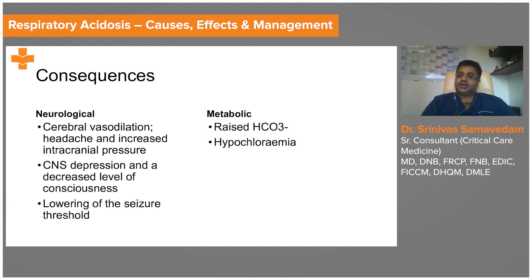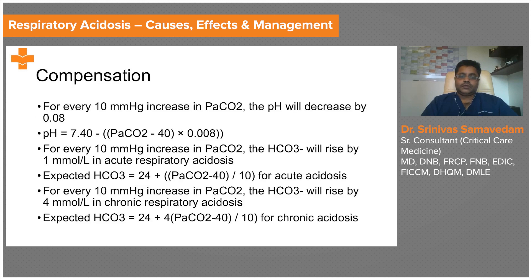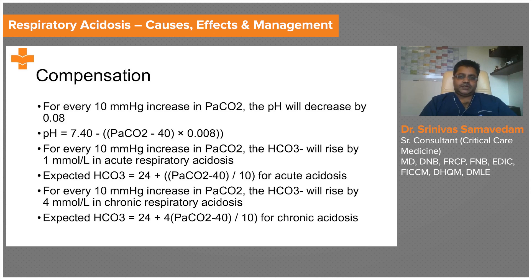Metabolically, the kidneys respond by retaining bicarbonate, causing bicarbonate to rise as compensation, along with possible hypochloremia. Unlike metabolic acidosis — where there is no chronic form because the respiratory system responds nearly instantaneously — the kidneys take up to 48 hours to respond to changes in CO2, creating a distinction between acute and chronic respiratory acidosis.